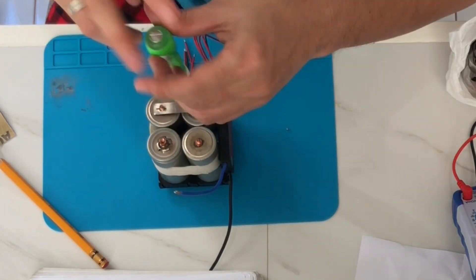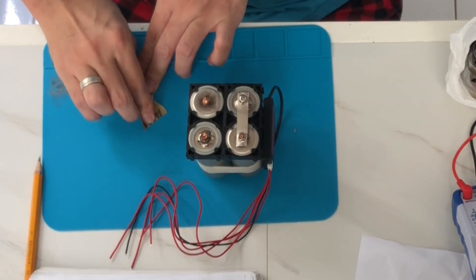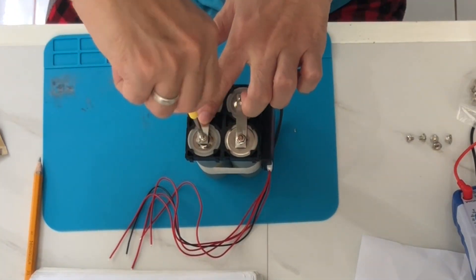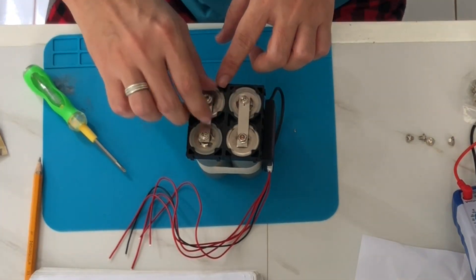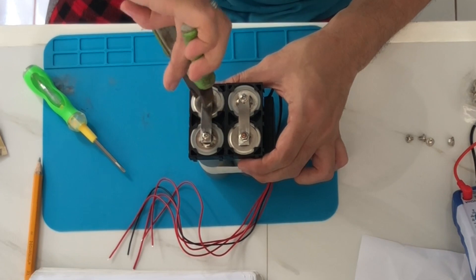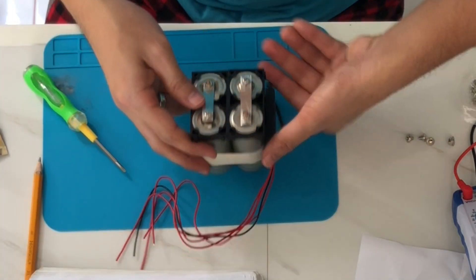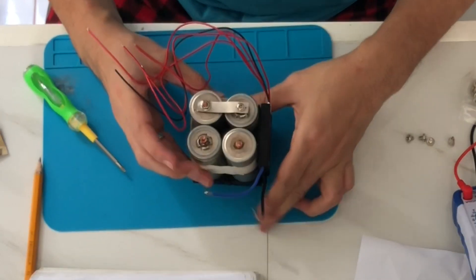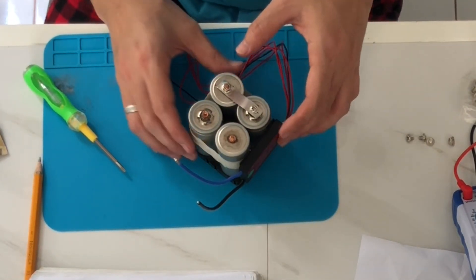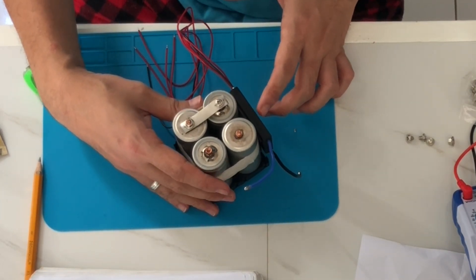One, the positive terminal of the first cell will connect to the negative of the second cell. And the positive terminal of the second cell will connect to the negative of the third cell. The positive terminal of the third cell will connect to the negative of the fourth cell. And that leaves us a negative of the first cell and a positive of the fourth cell. This is what we'll use later to connect our load. And this is where we connect our UPS.